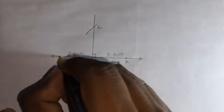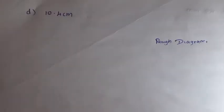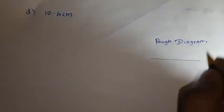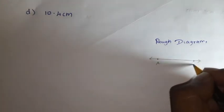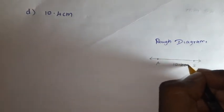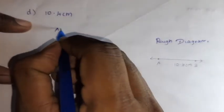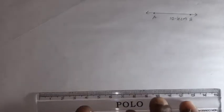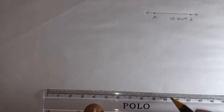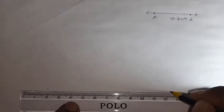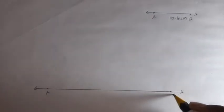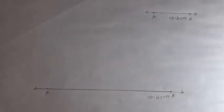2 centimeter radius. 5.8 minus 2 is 3.8. Round off to 4. So upload arc, download arc. B, upload arc, download arc. The point is called C. The other point is called D. Connect the point.